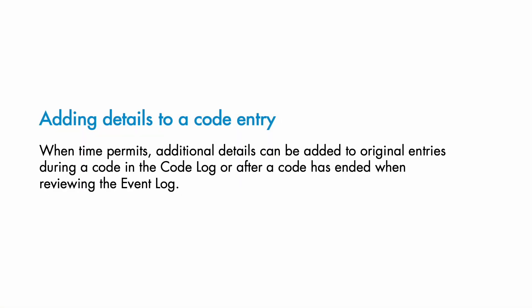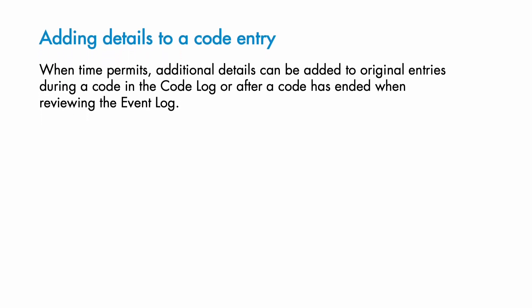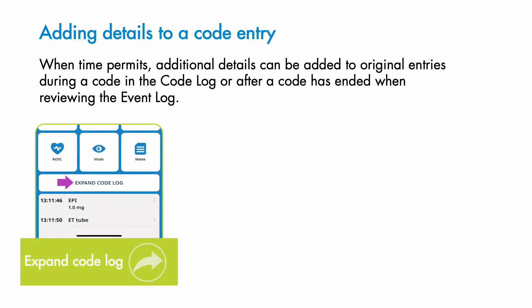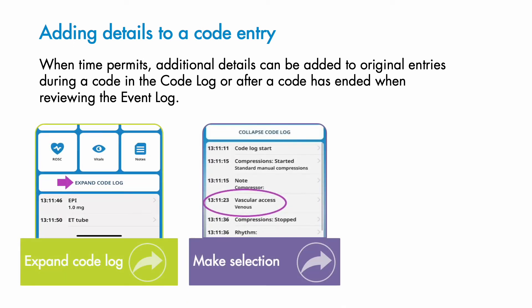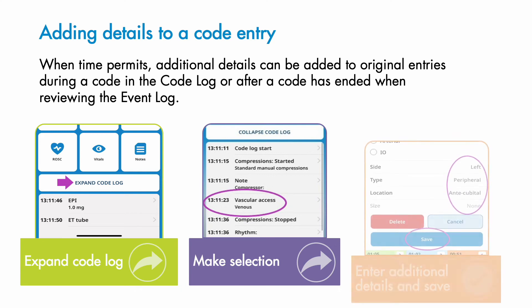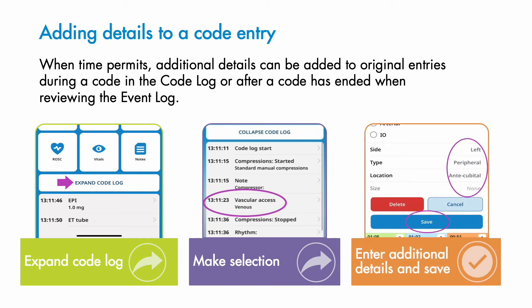When time permits, original entries made during a code can be modified or enhanced by adding additional details in the code log. Simply tap Expand Code Log, select the entry you'd like to modify, add any additional details, and hit Save. Details may also be added to code log entries after a code is ended by selecting the entry in the event log, making changes, and hitting Save.